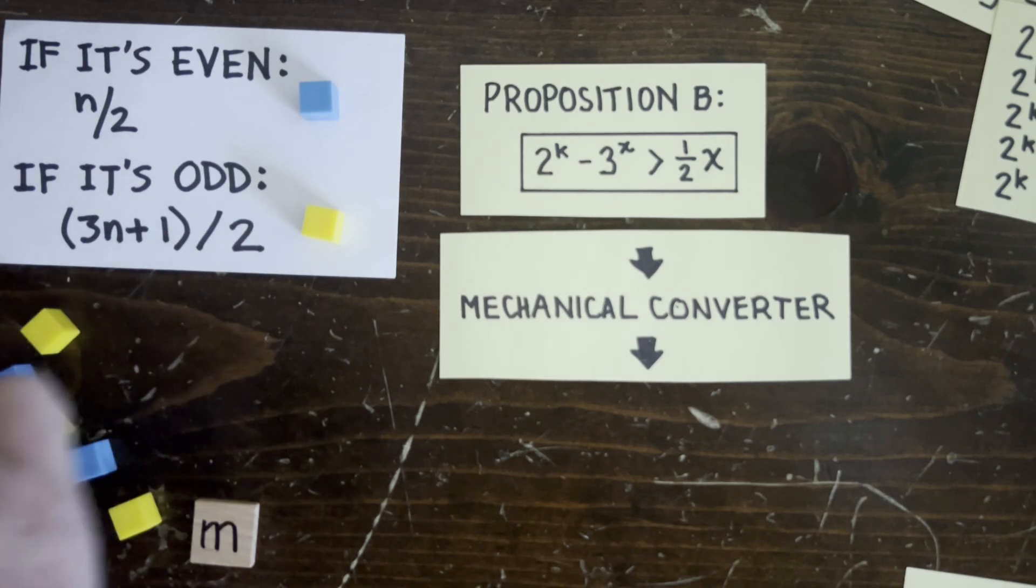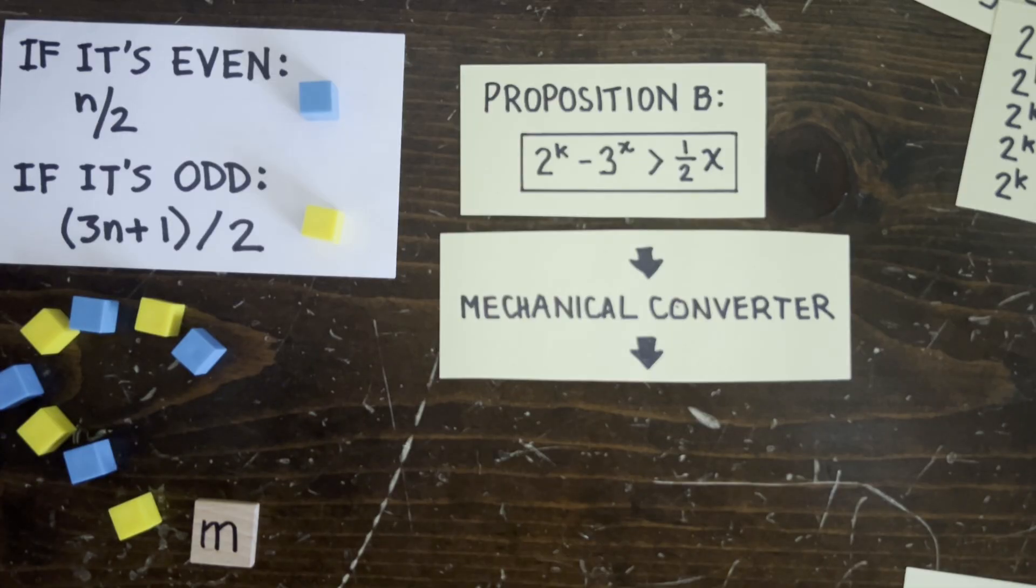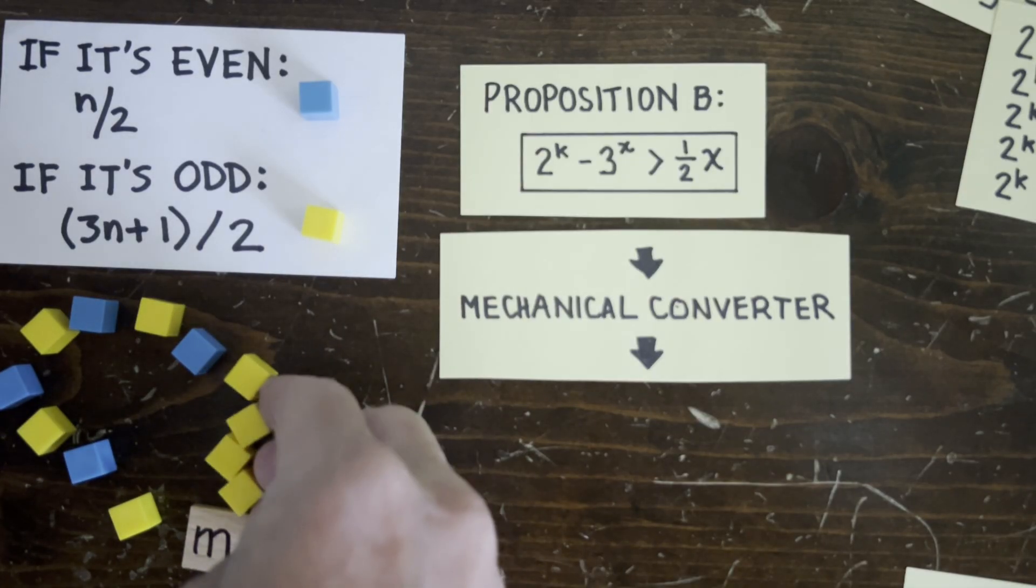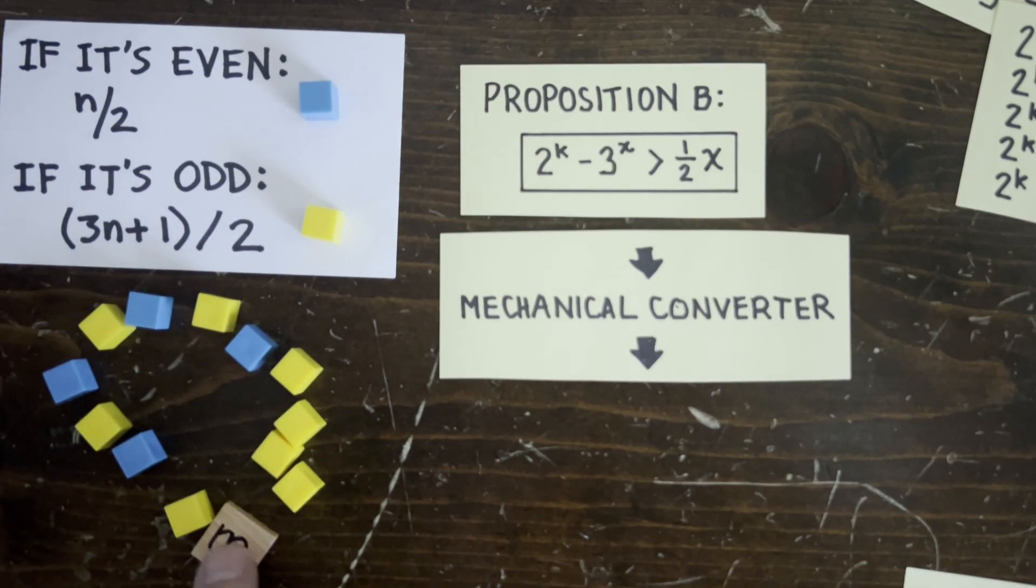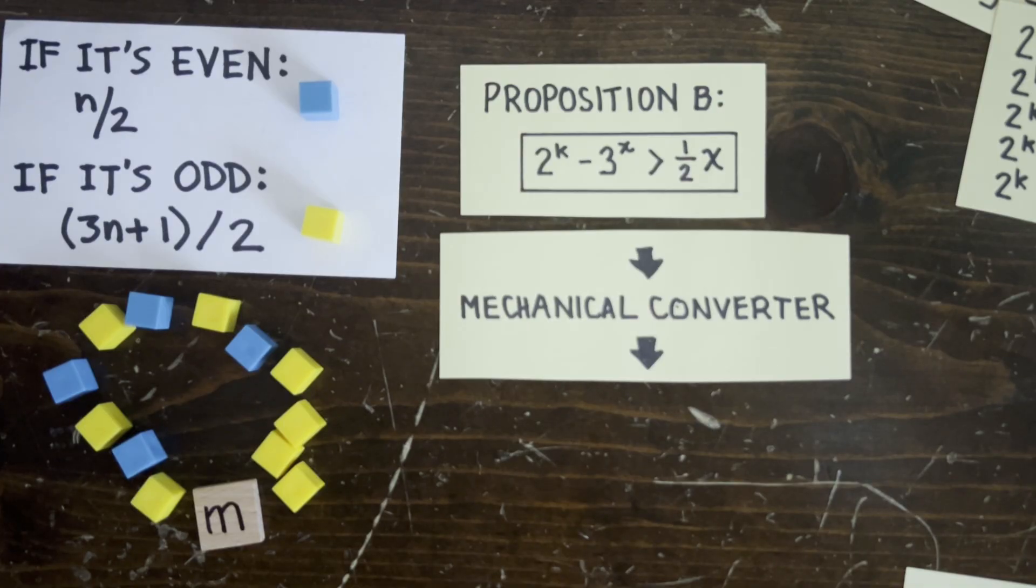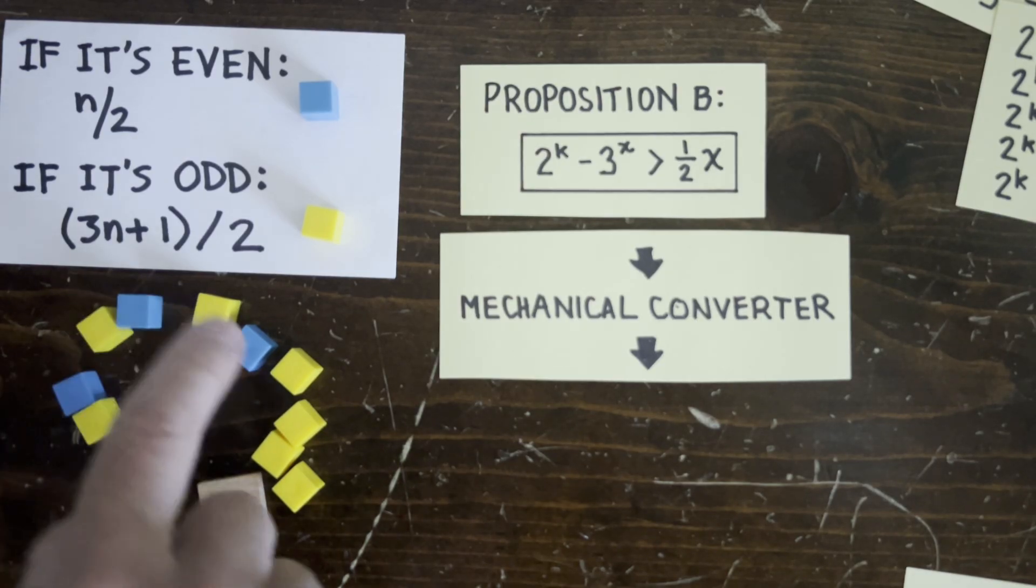Now, beta of w might already be a multiple of n, in which case we're done, so we have a Collatz counterexample loop. But if it isn't, no worries. We're going to modify shape w into a new shape v, where beta v is guaranteed to be a multiple of n.